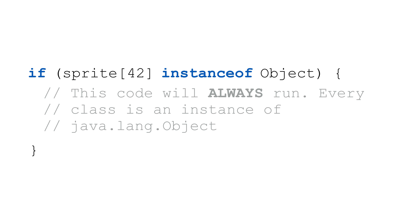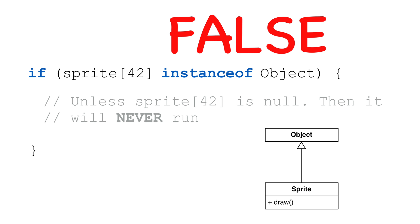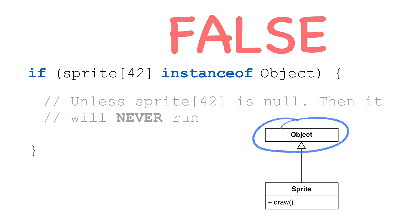If we test any instance against java.lang.Object, we will always get true. However, if we test null against any class, including Object, we will always get false. This makes sense since all classes in Java are subclasses of Object, and null is not a subclass of any object — it just means nothing. This is a good thing to remember: instanceof operations do not need explicit null checks. If the instance you're testing is null, the code will always return false.